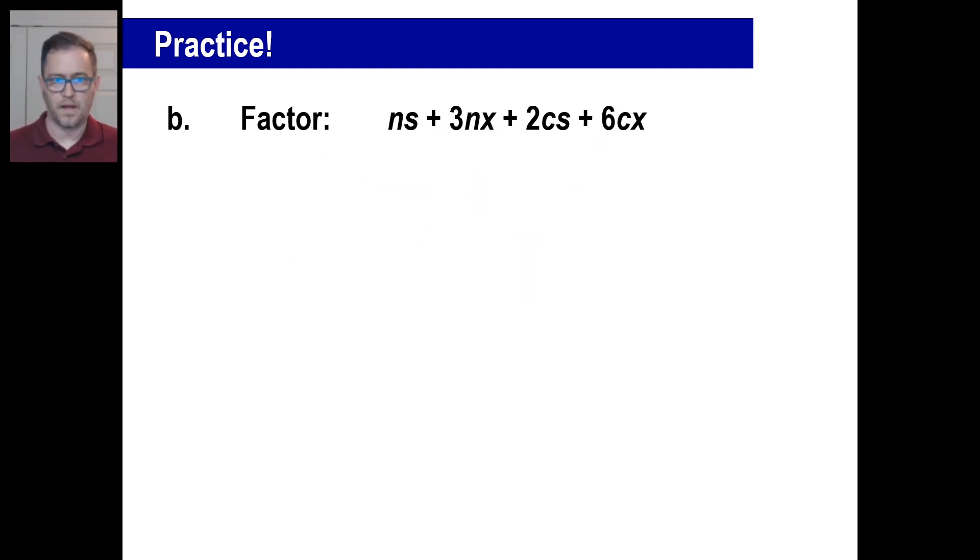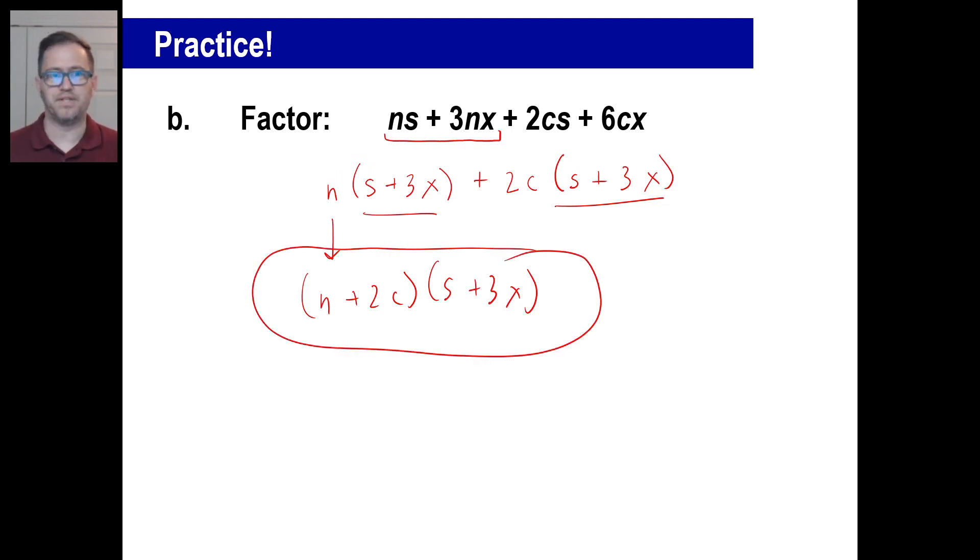Pause it and try b now. Okay, let's take a look at this one. Second one, we can just go ahead and lump these two together. We get an n, that gets pulled out, and we have s plus three x. Second one, the two comes out, and the c comes out. So again, we have s left here, and then six divided by two is three, and then c divided by c is gone, and then we just have the x. And you probably knew that, because that's the same as this. So we have the n plus two c times s plus three x. And there we go. And that's it. See you guys next time.